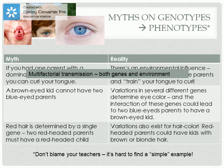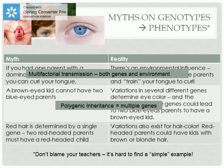Moreover, there are different genes involved in hair and eye color, and the combination of these genes — and even mutations of these genes — could lead to unanticipated results. This is polygenic inheritance.